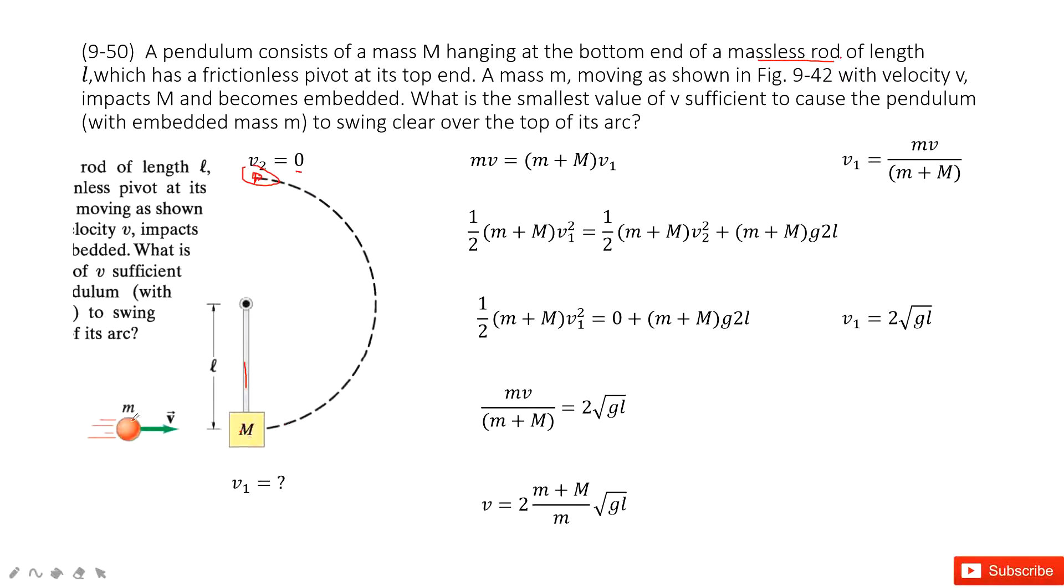So initially we can consider this bullet just hit the box. This is linear momentum conservation. Initial momentum equals final momentum.